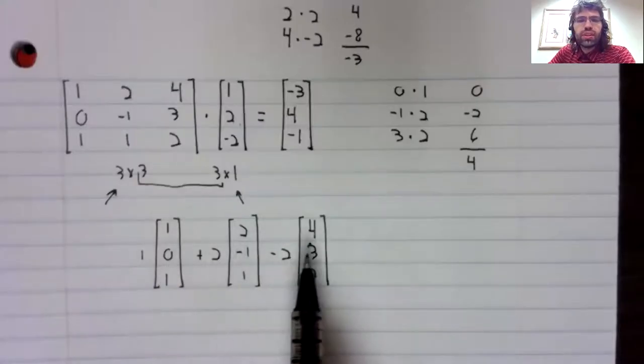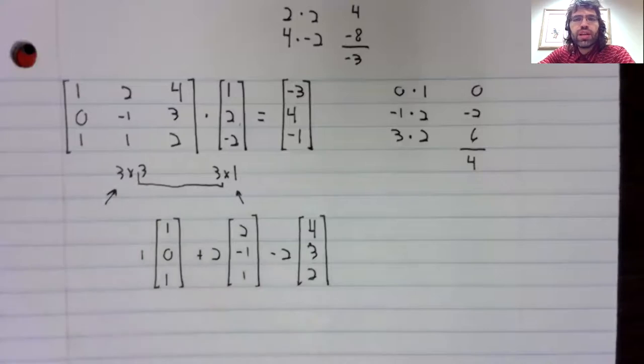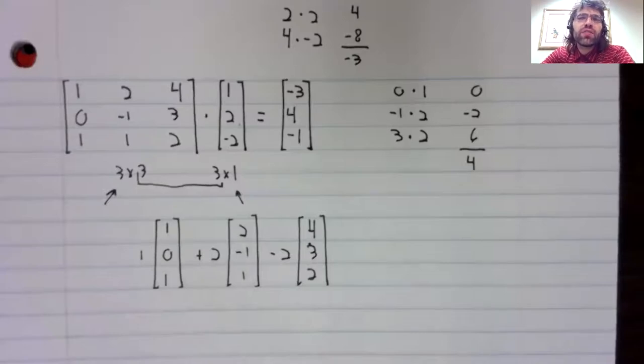And do all the scalar multiplication and then all of the addition. The downside of this method is that it's kind of a trick.